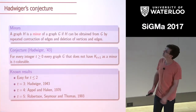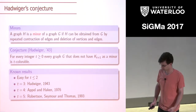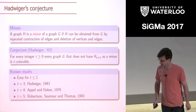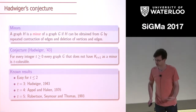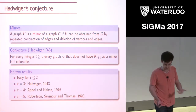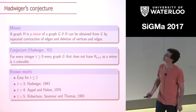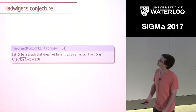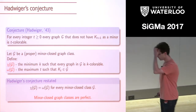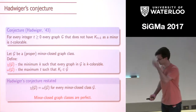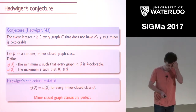Hadwiger's conjecture is our motivating statement. But as I was saying, we want to talk about minor-closed classes of graphs. This is still a statement about coloring of a single graph, so let me try to restate Hadwiger's conjecture in a way that makes it even more attractive.